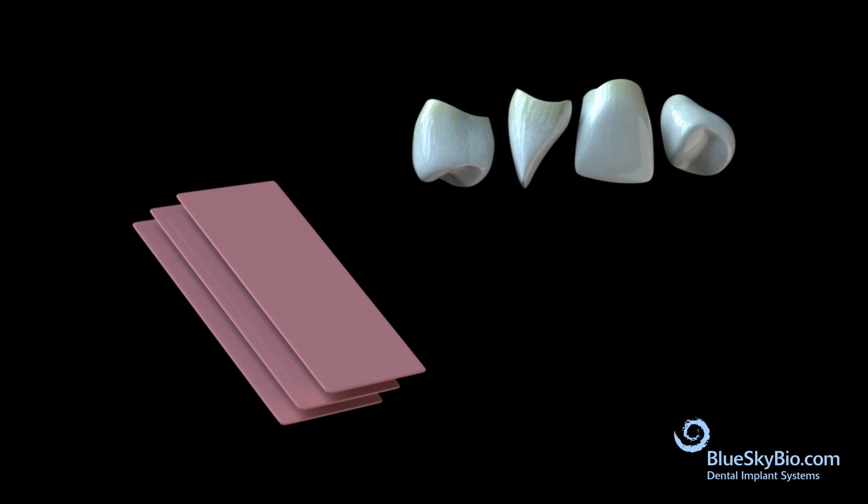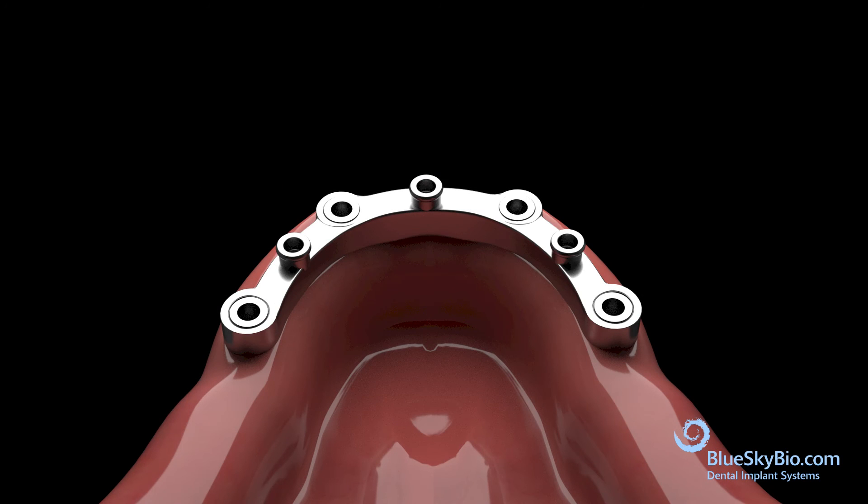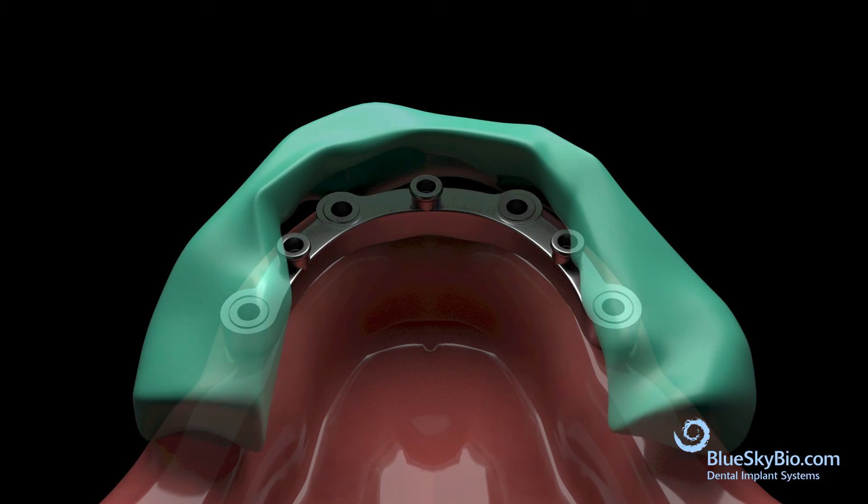Wax and denture teeth are used to create setup on cast. Process the denture and retentive housings as usual.